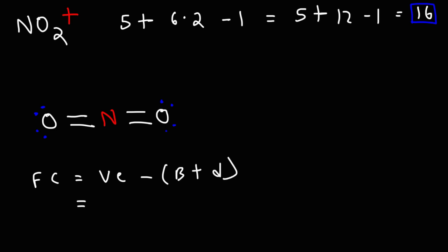It's going to be equal to the valence electrons minus the bonds plus the dots. So let's start with oxygen. Oxygen has six valence electrons and in this structure it has two bonds, four dots. Two lone pairs is equal to four dots. So this is six minus six. So the oxygen atoms are neutral in charge.